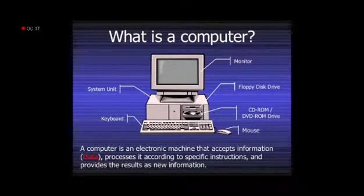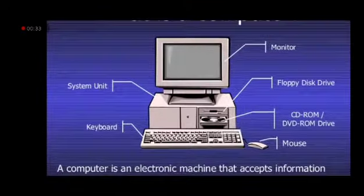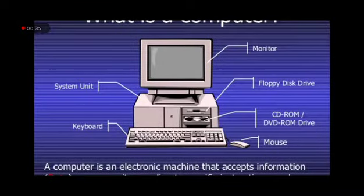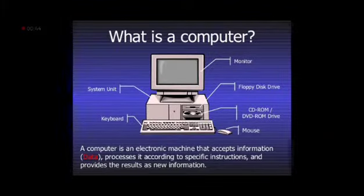A computer is an electronic machine that accepts information and data, and processes it according to specific instructions, and provides the result as new information. This is the desktop computer — look at the formation: it has a system unit, it has a keyboard to give information, it has input devices, output devices, and things like that. This is a proper and complete definition of a computer.